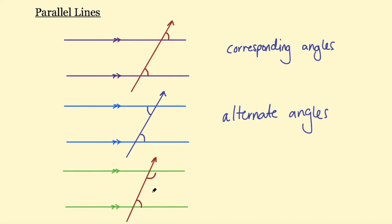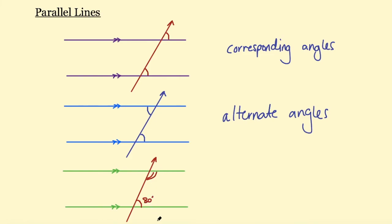...must add up to 180. Let's say this is 80 degrees - as this is a straight line, this angle here must be 100 degrees. These two angles are alternate, so that angle in here must also be 100 degrees. This tells us that these two angles on the inside must add up to 180. Because they're on the inside - they kind of look like they're inside the same section - we call these interior angles, and they add up to 180 degrees.